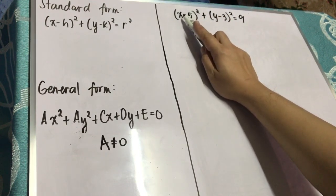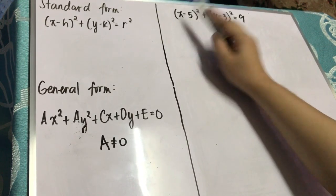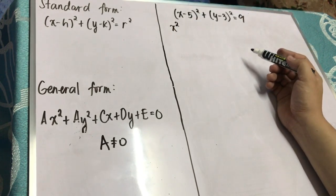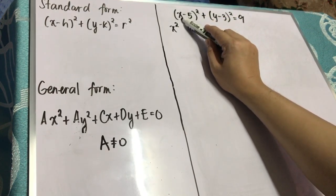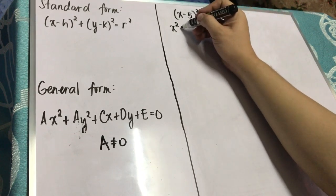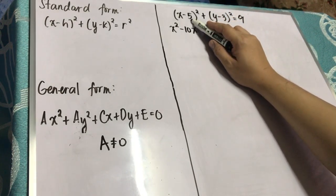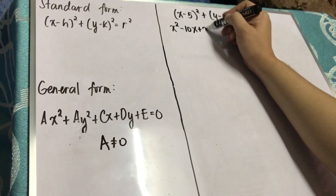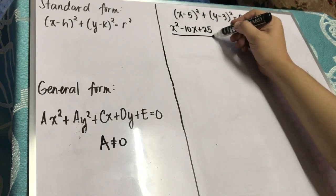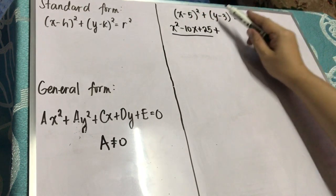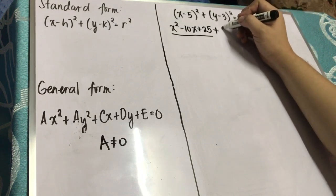We will apply these steps in expanding quantity of x minus 5 squared plus the quantity of y minus 3 squared. Let's solve for the x group first. x is the first term, negative 5 is the second term. You square the first term, so you have x squared. To solve for the middle term, you multiply negative 5 times x is negative 5x, times the constant 2, so you have negative 10x. Then you square the second term: negative 5 times negative 5, that's positive 25. This is the product for the x group.